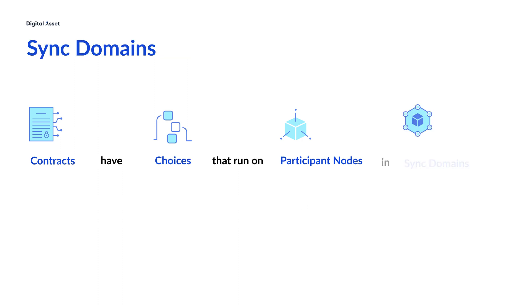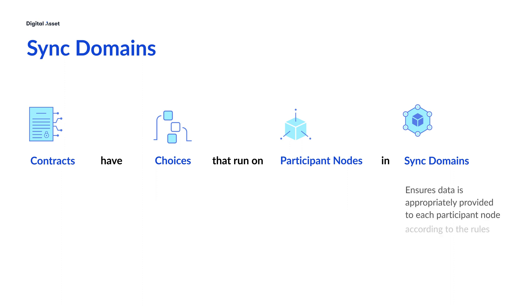Connecting it all together is the sync domain. This is what coordinates and runs the Canton protocol that ensures data is appropriately provided to each participant node according to the rules outlined in the contracts and choices. A collection of participant nodes connected to sync domains can then connect to each other over the global Canton network or even with another private sync domain.